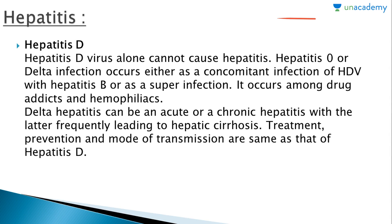Hepatitis D virus alone cannot cause hepatitis. Delta infection occurs either as a co-infection of hepatitis D virus with hepatitis B, or as a super-infection. It occurs among drug addicts and hemophiliacs. Delta hepatitis can be acute or chronic with a high fatality frequency. Cirrhosis and liver cancer may be produced by most hepatitis viruses, whether A, B, C, D, or E.